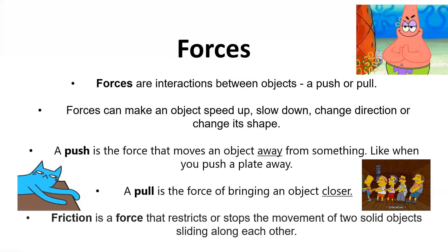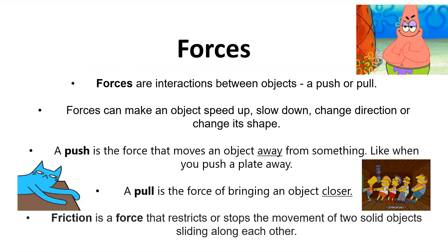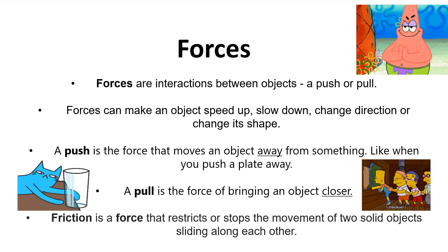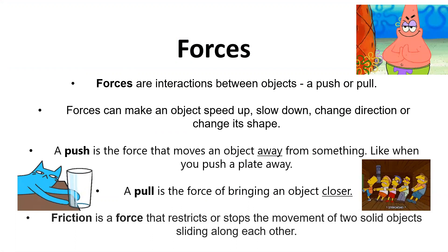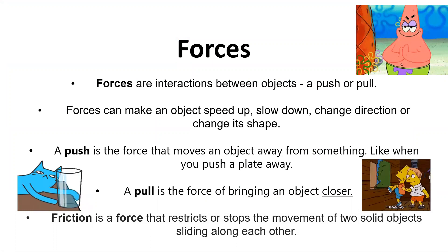So then we have forces. Forces are interactions between objects, which is a push or a pull. Forces can make an object speed up, slow down, change direction, or change its shape. A push is the force that moves an object away from something, like when you push a plate away. A pull is the force of bringing an object closer. Then we have friction. Friction is a force that restricts or stops the movement of two solid objects sliding along each other.